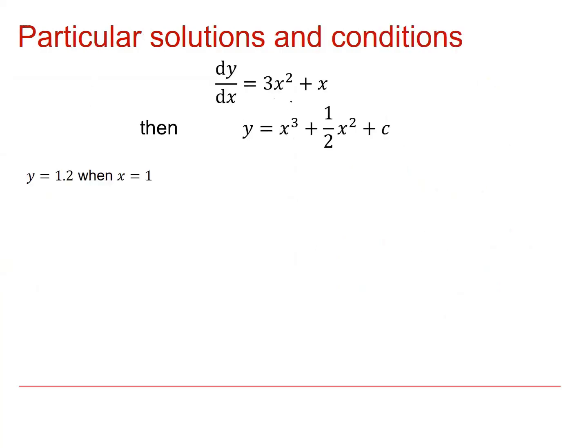Here's our differential equation. Here's our general solution. And here are what we call a condition for that. If we plug those in, I'm going to get that 1.2 is equal to 1 plus 1 half plus c. And that implies that c is minus 0.3.